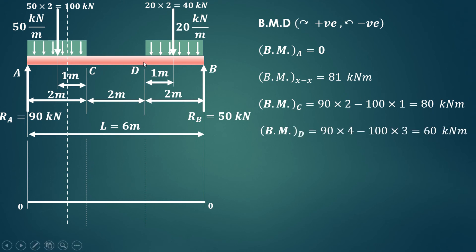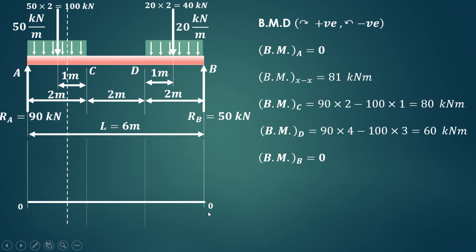For bending moment at point D, considering all forces to the left of D: RA gives 90 times 4 equals 360, and the 100 kilonewton load at 3 meters from D produces minus 100 times 3 equals minus 300, giving 60 kNm. Bending moment at B is zero, since B is a simple support — this can be verified by considering all forces on the left, which also yields zero.